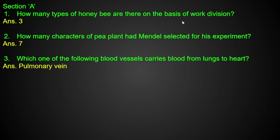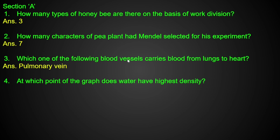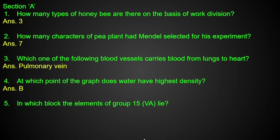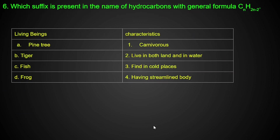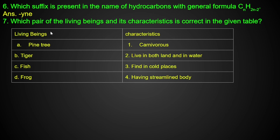First answer: pulmonary vein — which blood vessel carries blood from lungs? Next, at which point of the graph do we have body density? In which block do group 15 elements live? They live in the p-block. Next, which suffix is represented by C, H2, and minus 2? If you use alkynos suffix: K, Y, and E.